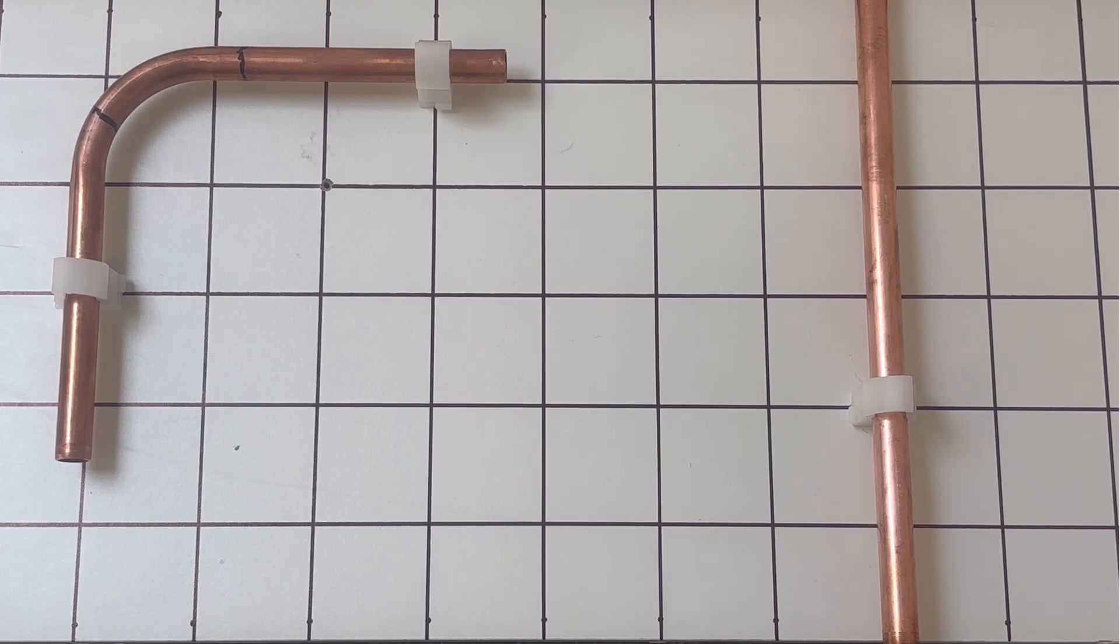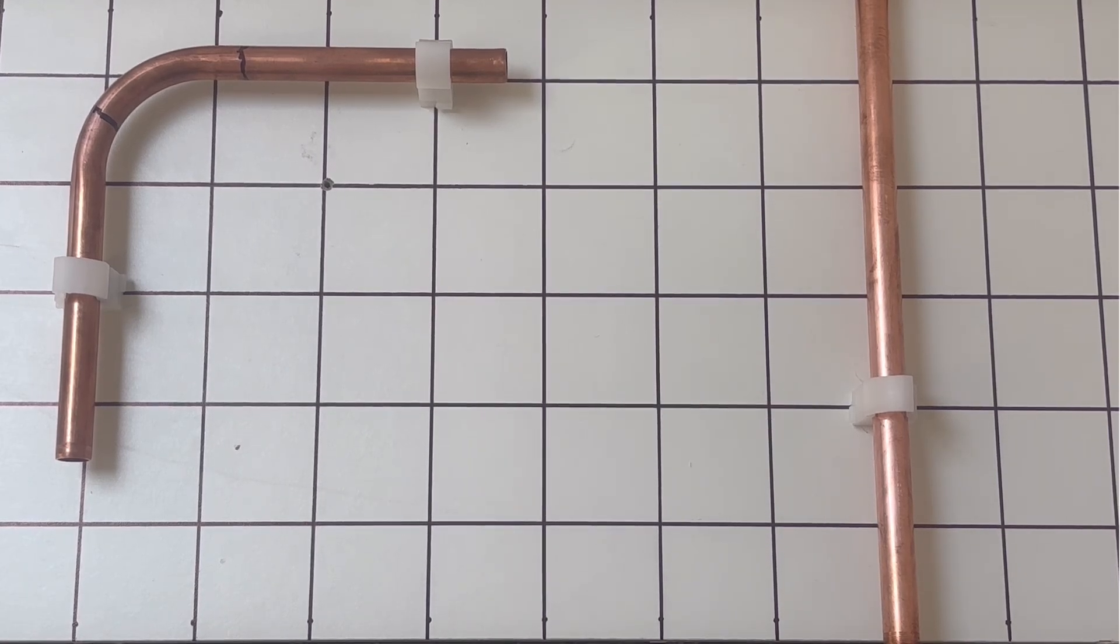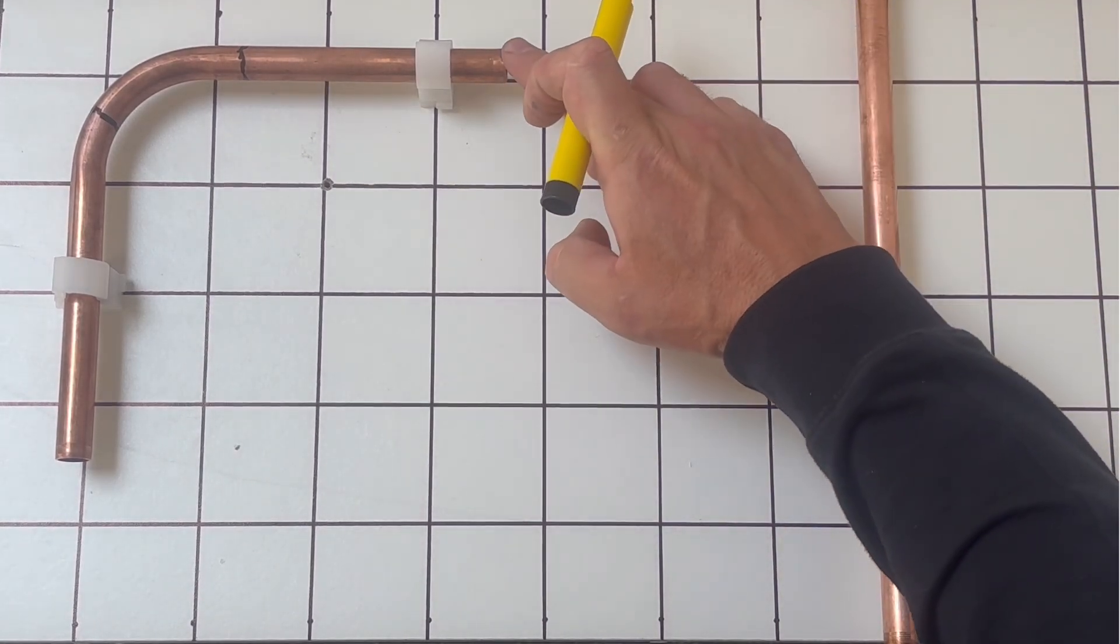We're using the graph board to make it easier for people that can't get their way down the measurements and where the markings go. So what we're going to do today is we're going to bend this pipe so it comes in line with that pipe there.